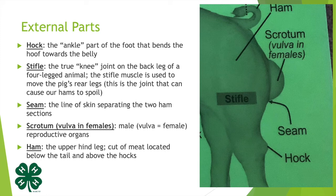The seam is the line of skin separating the two ham sections. At the very rear you'll find the scrotum in males and the vulva in females — these are the reproductive organs of our pigs. The upper section here is the ham, which is the upper hind leg cut of meat located below the tail and above the hock.